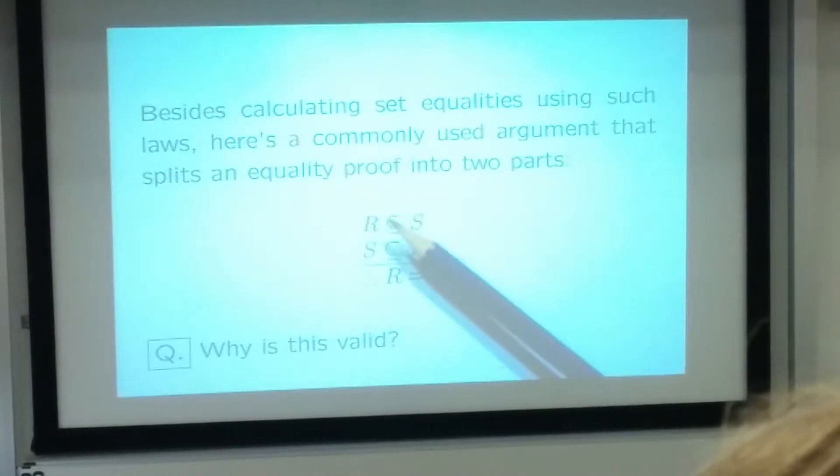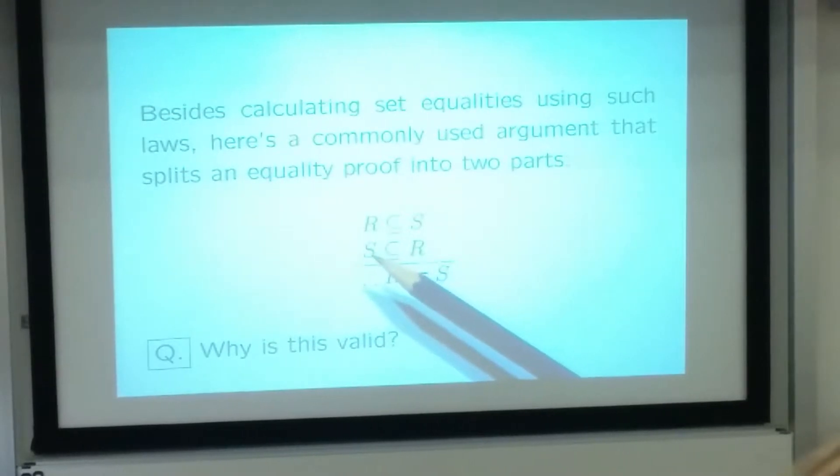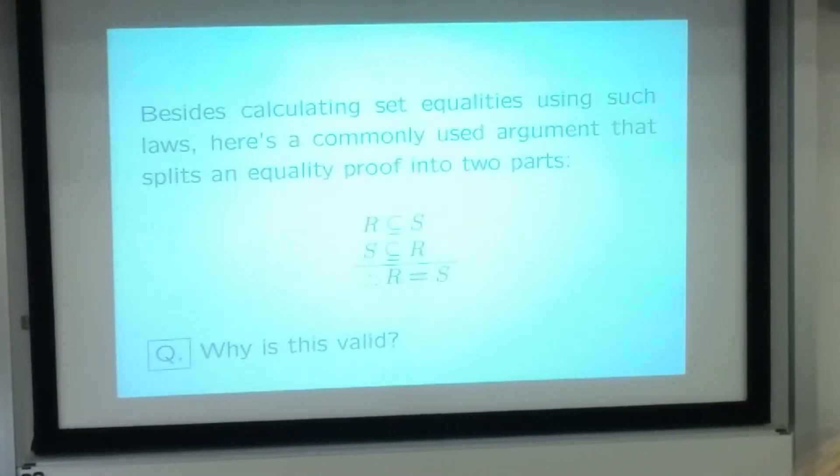So, indeed, if we can show, divide and conquer, we can split the proof up into two parts. If we can show, first of all, that everything that belongs to R also belongs to S, and then also the other way around, that everything that belongs to S belongs to R, then we may indeed conclude that these are equal sets.